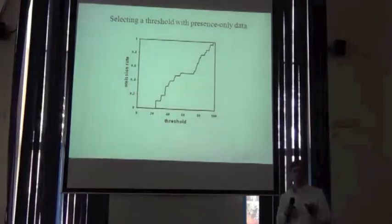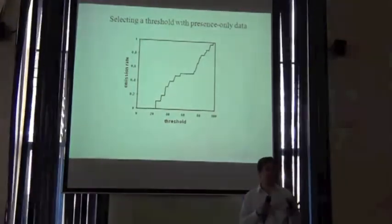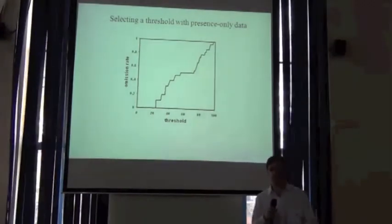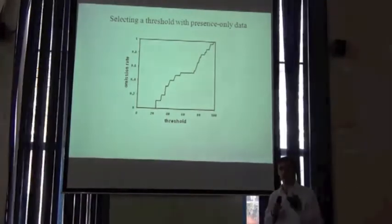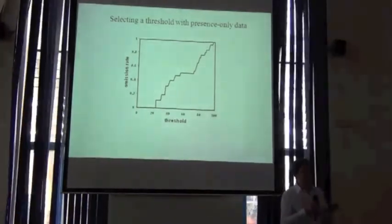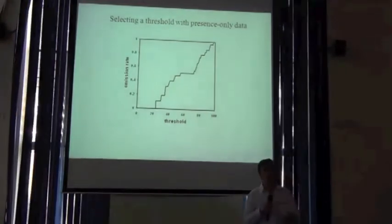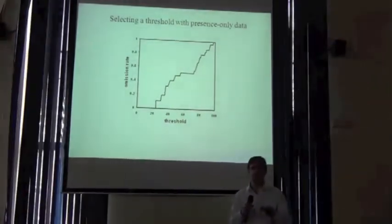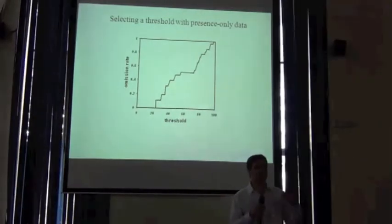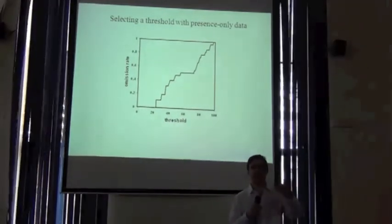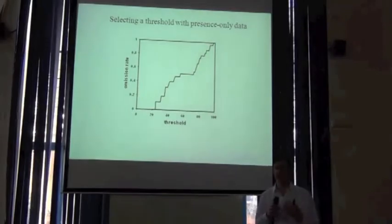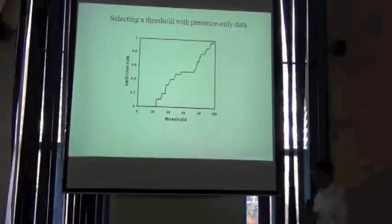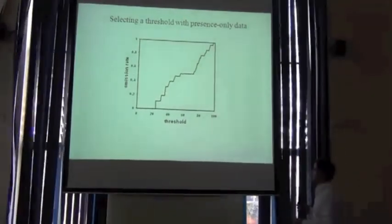You'll see there's some crossover here with what we talk about tomorrow morning in terms of evaluation statistics. But what we do is it's really part of the model calibration process. We set this threshold based on the data that was used to build the model — so this is before we evaluate it. We don't use the data that we've kept out to test the model; we use the calibration data set.